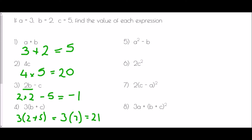Question 5 involves indices because we have a squared. We fill in all the values: that's going to be 3 squared take away 2. We need to remember BIDMAS again — indices come first. 3 squared is 9, take away 2, and 9 take away 2 is 7.